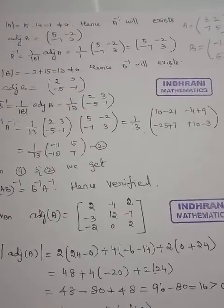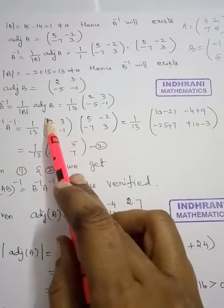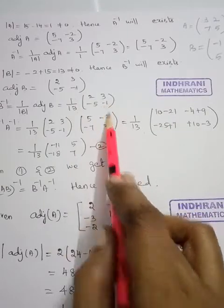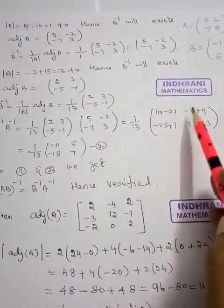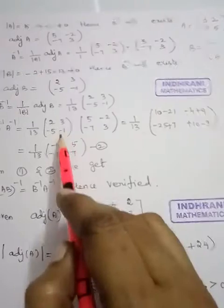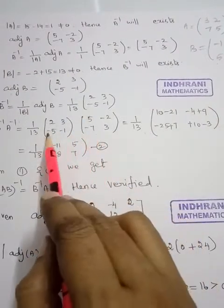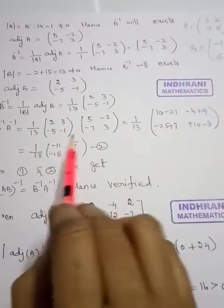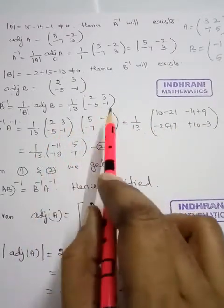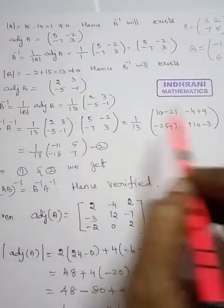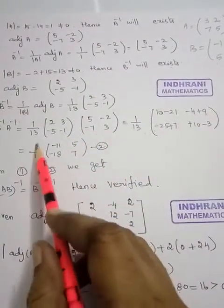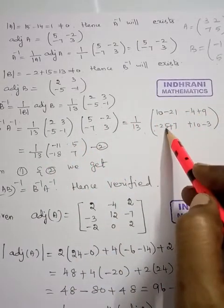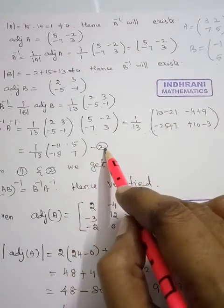First row with first column: 2 into 5 is 10, plus 3 into minus 7 is minus 21. First row with second column: 2 into minus 2 is minus 4, plus 3 into 3 is plus 9. Second row with first column: minus 5 into 5 is minus 25, minus 1 into minus 7 is plus 7. Second row with second column: minus 5 into minus 2 is plus 10, minus 1 into 3 is minus 3. So 1 by 13 into the simplified matrix gives minus 11, 5, minus 18, 7. This is called equation number 2.